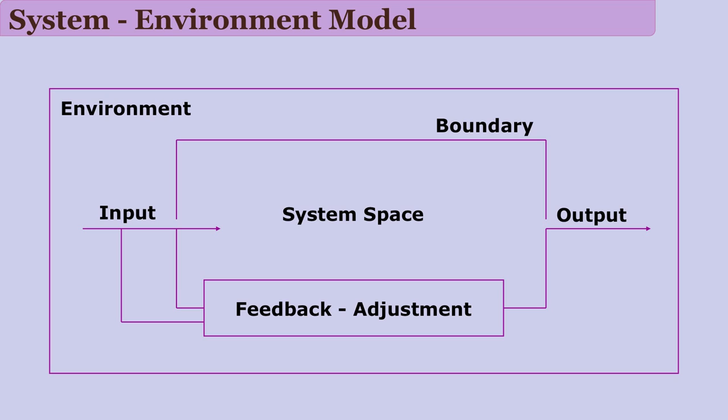Before proceeding with systems approach and actual system development, we need to understand how a system functions. For that, let us see the system environment model. Any system has some components as inputs. Then we need to define many processes on those inputs. Outputs are the real goals or outcomes for which the system is being designed. The inside area where all processes happen is the system space.